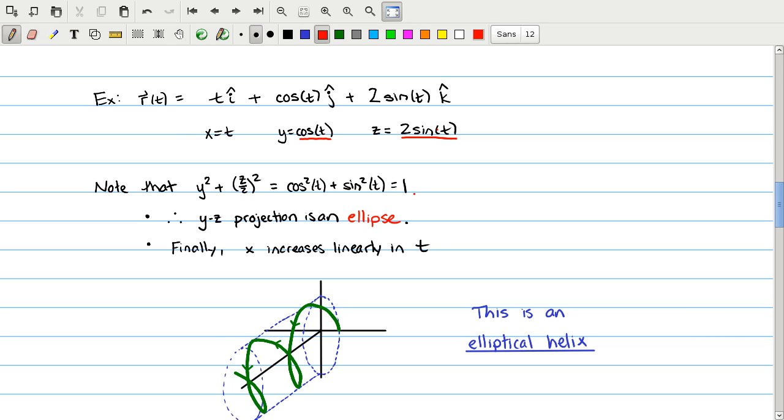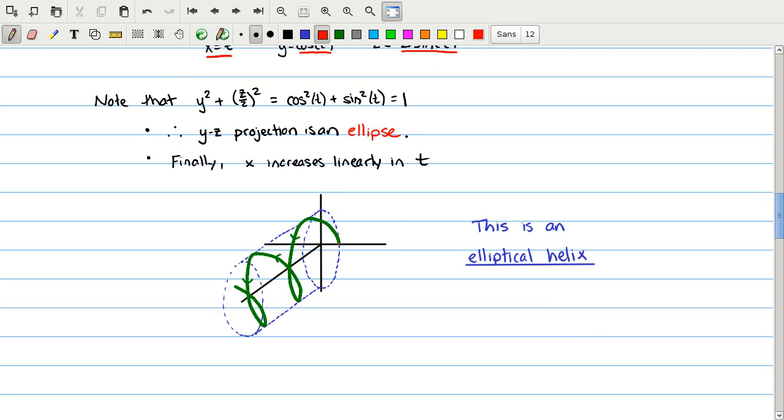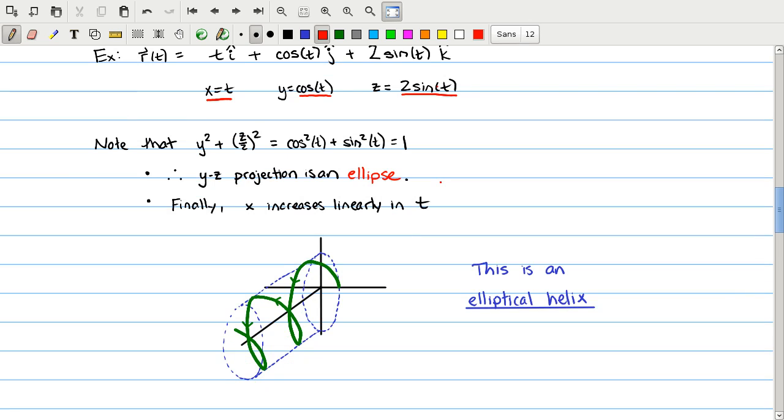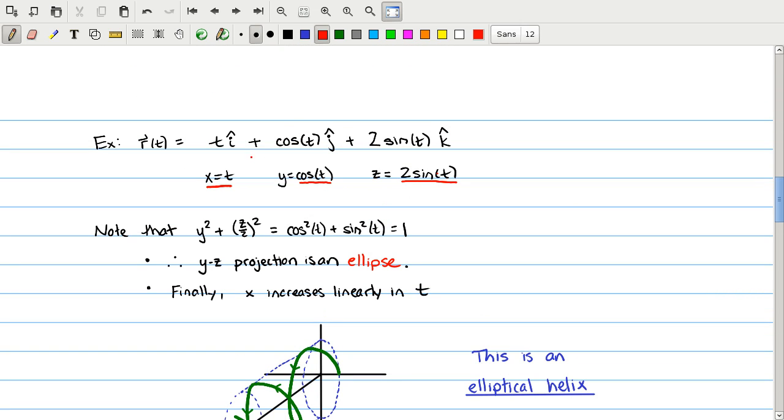So if we ignore x for a moment and just consider the yz projection, then this is an ellipse. In addition to that information, we see that x is just increasing linearly as a function of time. So we can sketch an ellipse in the plane. Here is our ellipse in the yz plane, and now we can just gradually increase x as we wind our way around the ellipse. And we see that this object is helical in nature, and we would call this an elliptical helix. If the coefficients of y and z were the same, it would be a circular helix. But this is a very common curve, and as you see, it's quite simple to represent parametrically with just these simple functions t, cosine t, and 2 sine t.